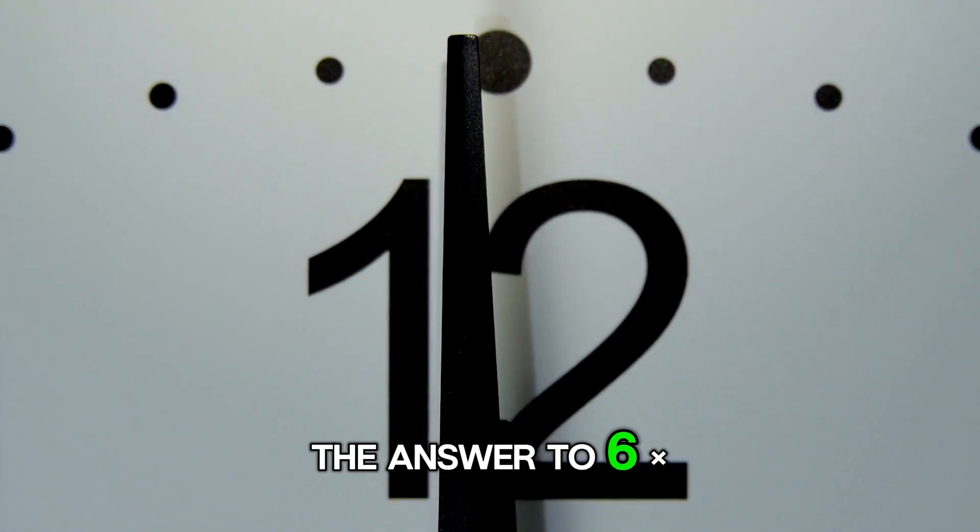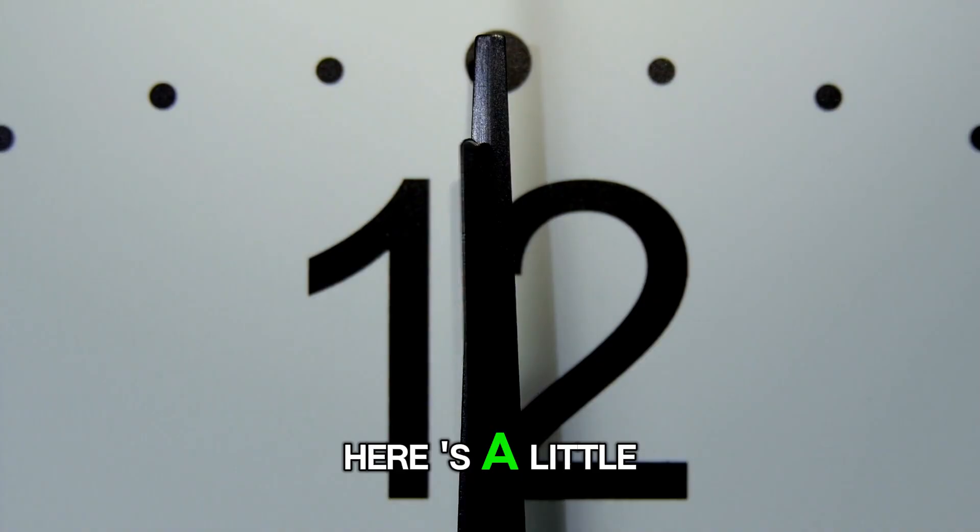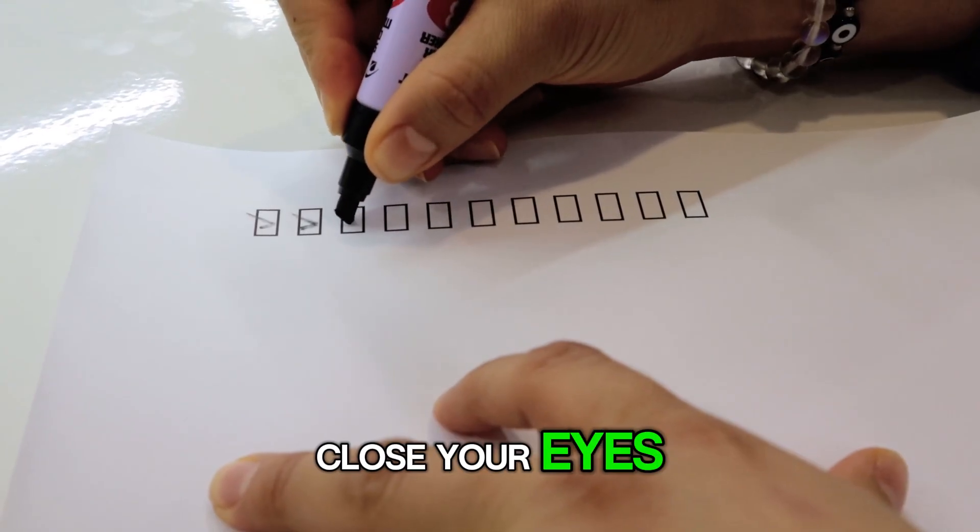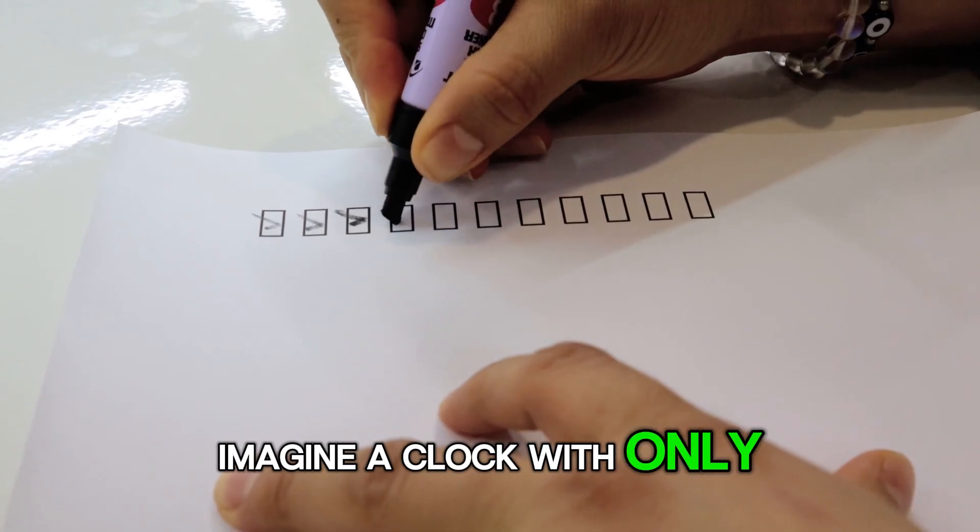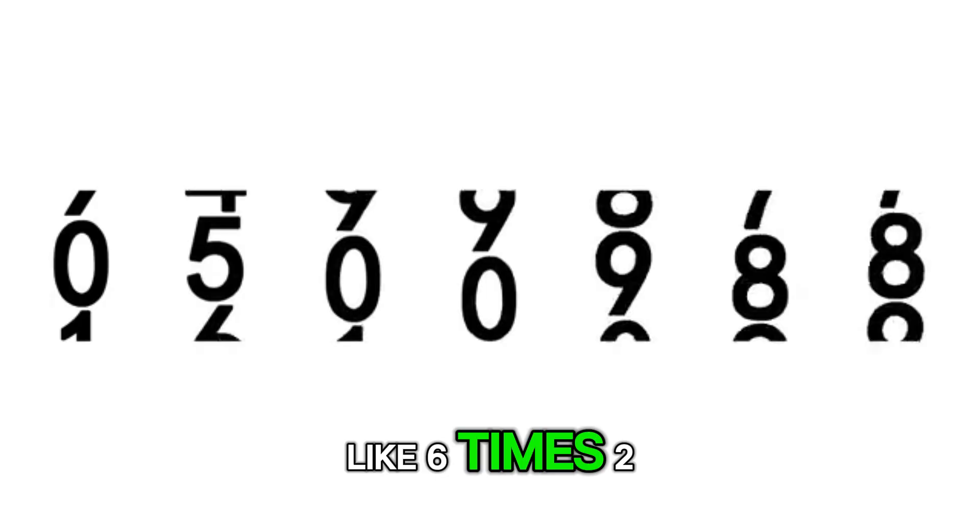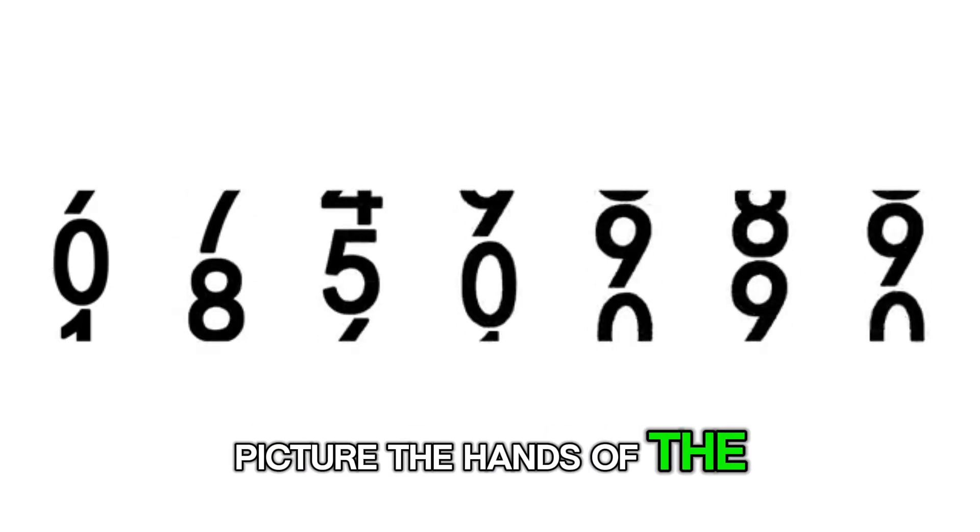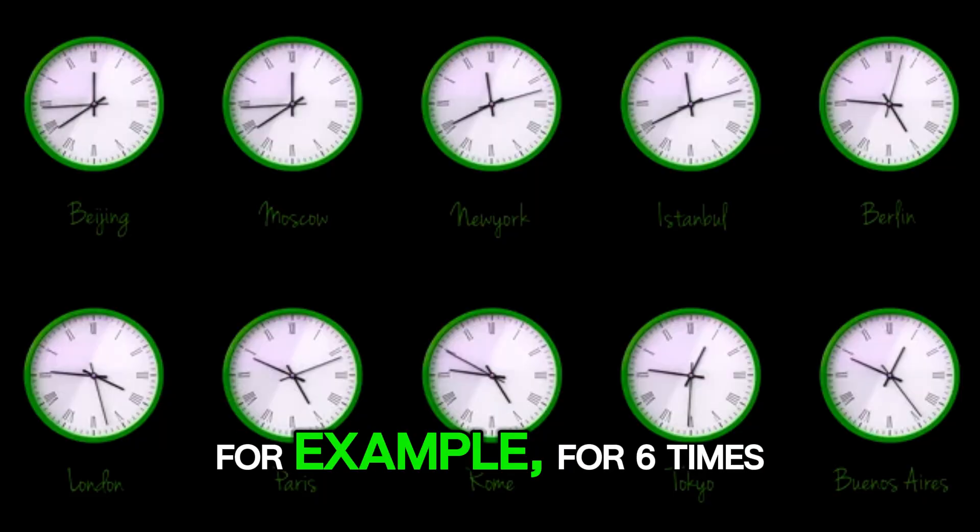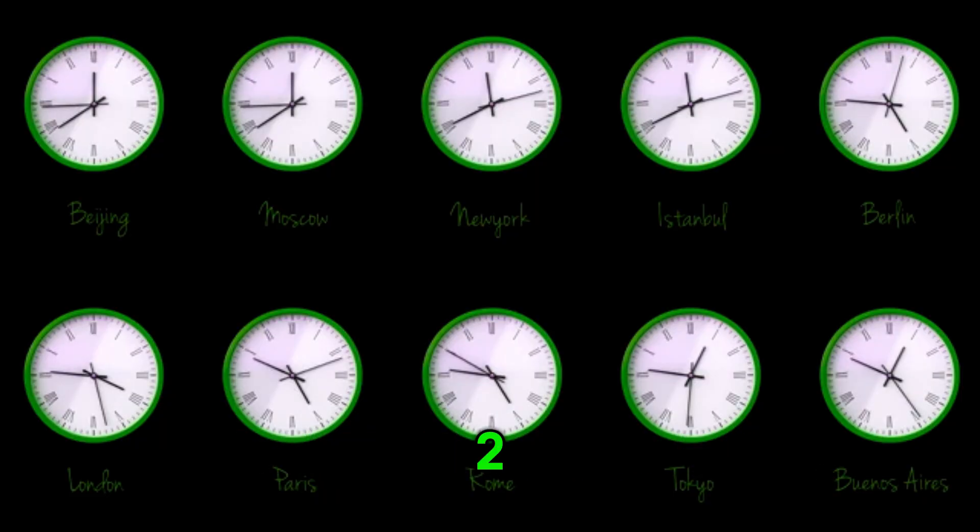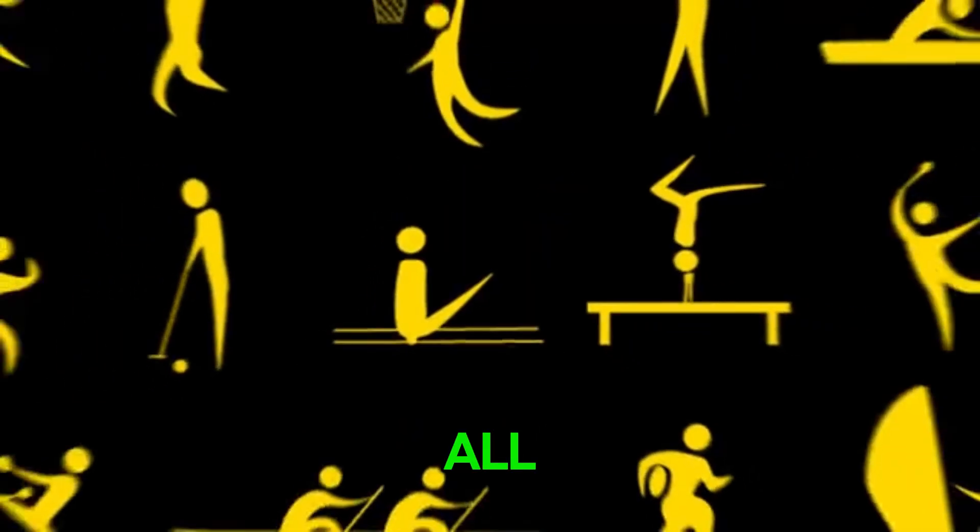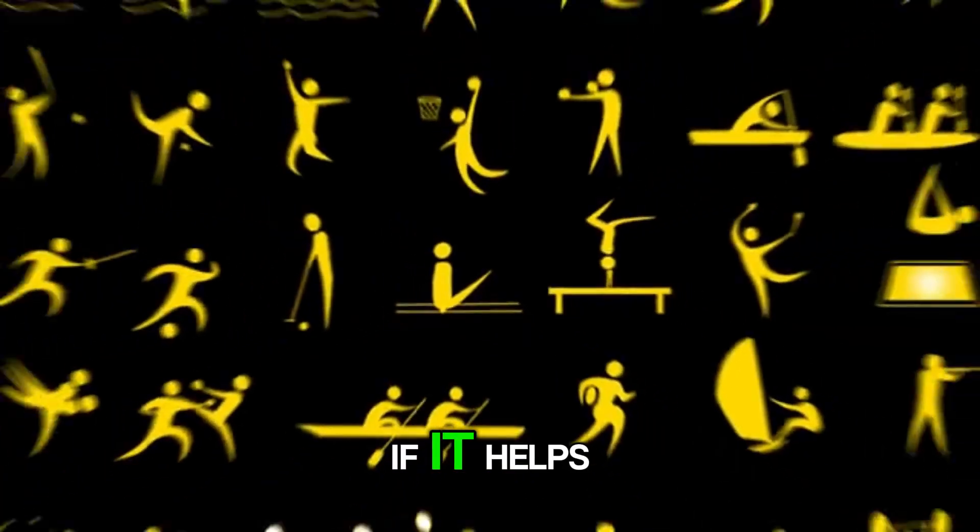And here's a bonus for those who made it to the end of the video. The answer to 6 times 11 is 66. And here is a little trick to help you remember all the answers. Close your eyes. Imagine a clock with only numbers 1 through 6 around it. Now for each question, like 6 times 2, picture the hands of the clock pointing to the numbers that multiply to the answer. For example, for 6 times 2, the hands would point to the number 6 and 2, and their sum would be 12.